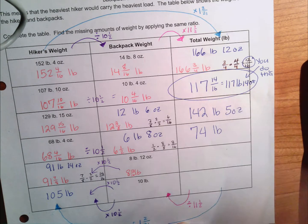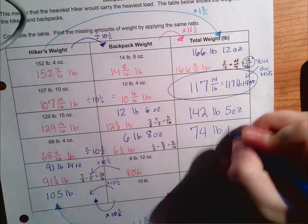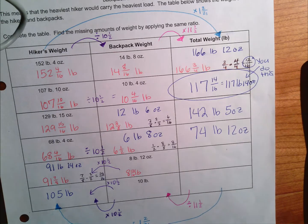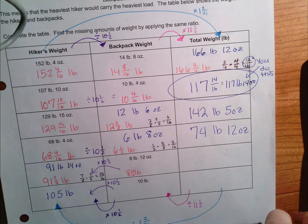My next one: 91 pounds and 14 ounces. I'm adding that to eight pounds and 12 ounces. That gives me 100 pounds and then five-eighths of another pound.